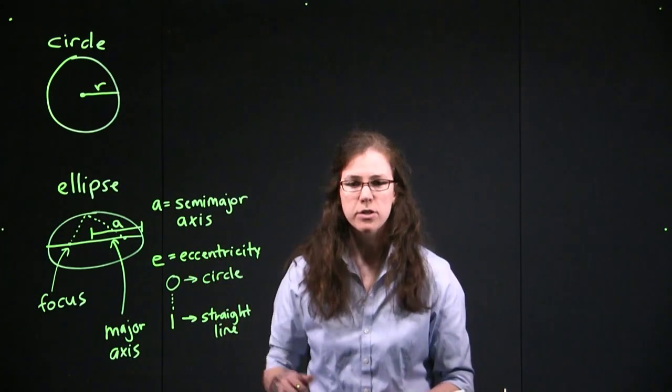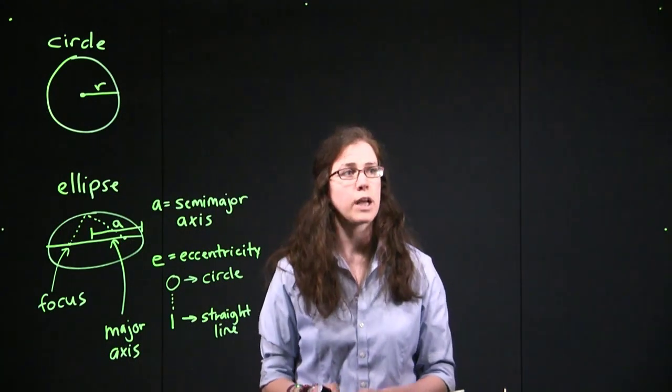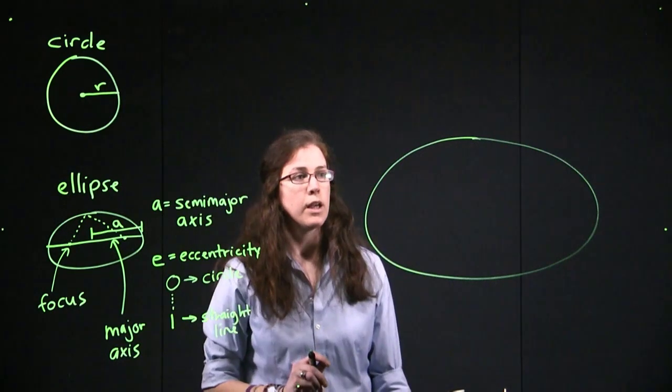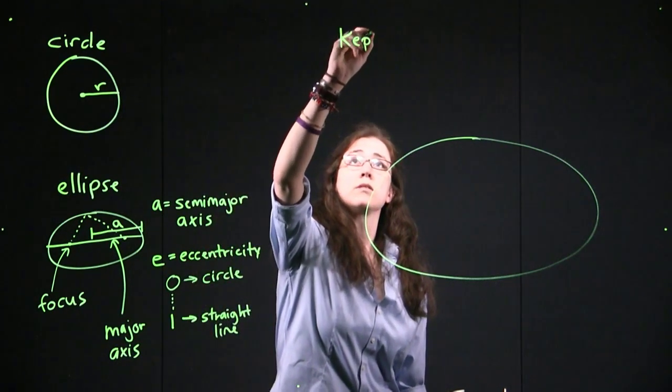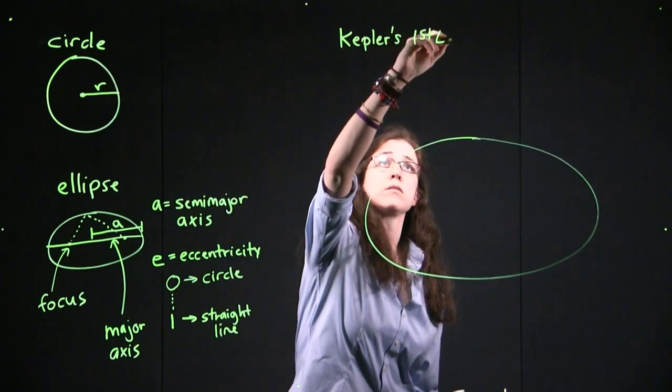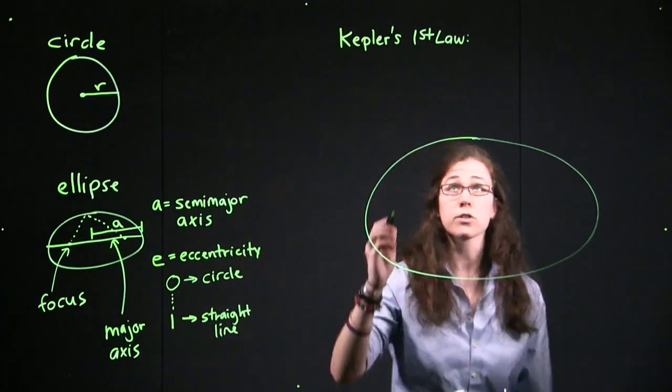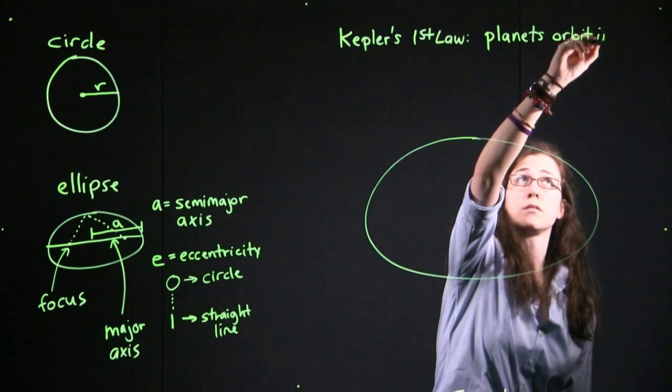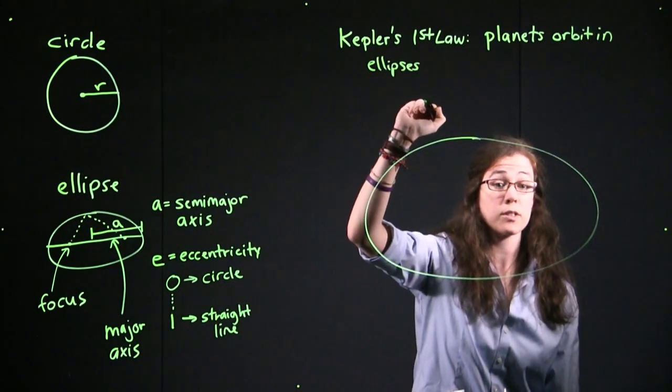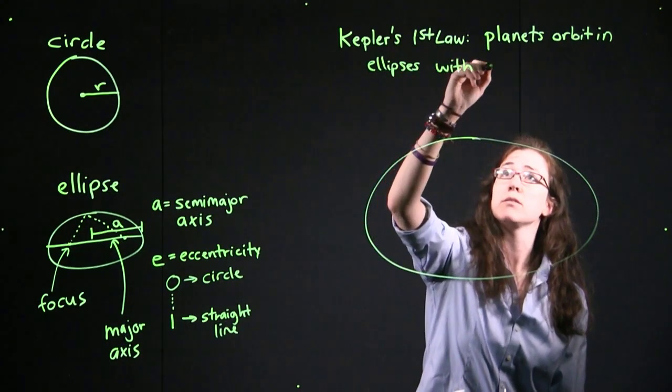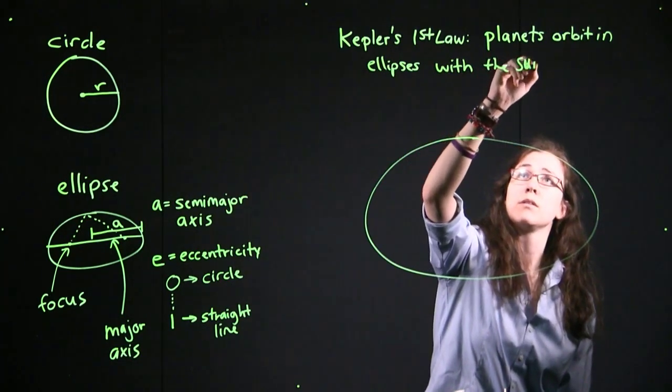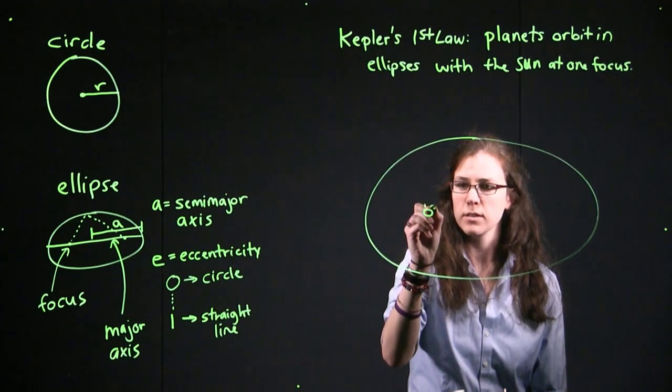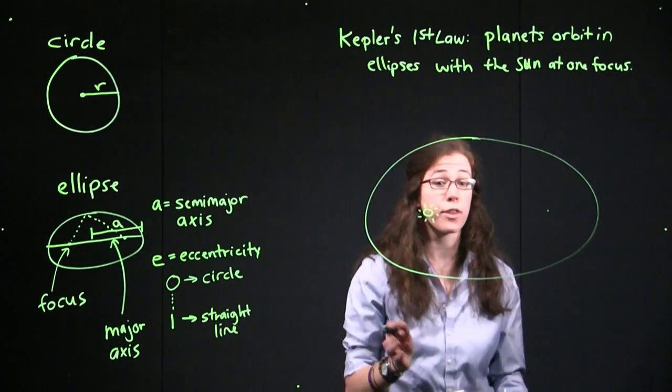Now let's make sure we understand how that works for our solar system. If we draw a big ellipse here, then Kepler's first law is that rather than being in circles, planets orbit in ellipses with the Sun at one focus. So, the Sun is at a special spot. Since we don't have a single center, we just put the Sun at one of these two focus points. And there's nothing at the other focus point.